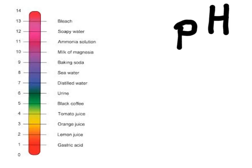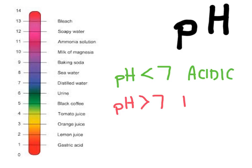If a solution has a pH of below 7, then we can say that it's acidic. If a solution has a pH that's above 7, then we can say that it's basic.